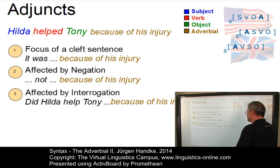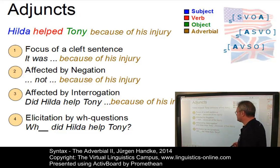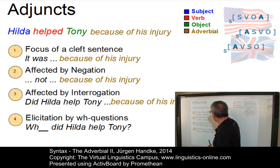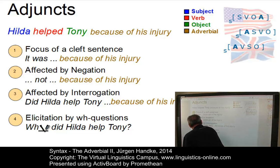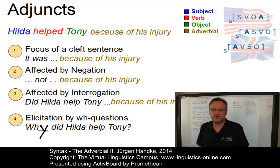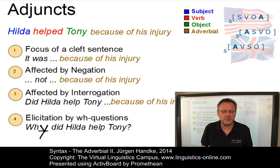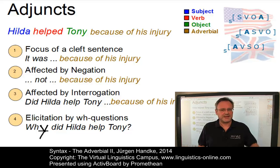The fourth criterion is the possibility of eliciting adverbials by means of WH-questions. Just as we can elicit subjects with 'Who helped Tony?' and objects with 'Hilda helped whom?', for the adverbial the elicitation question is 'Why did Hilda help Tony?' There are further criteria — such as that adjuncts usually occur in the same tone unit as subject, verb, and object — but these are the central criteria that apply to adjuncts.